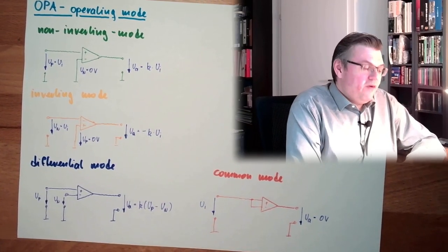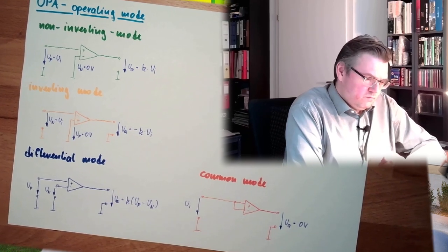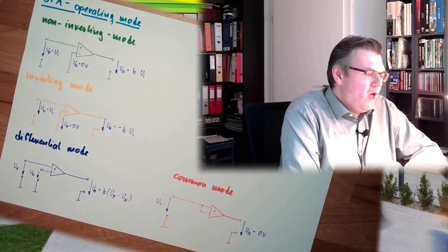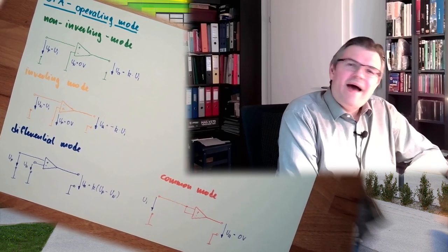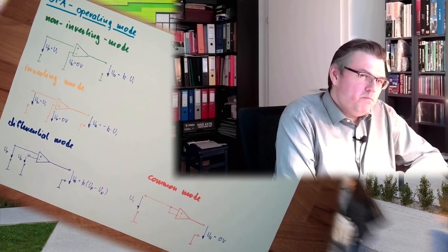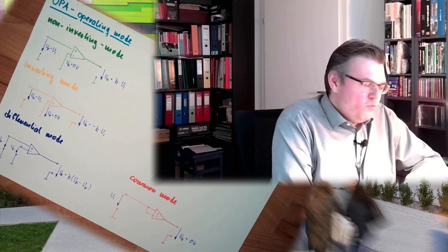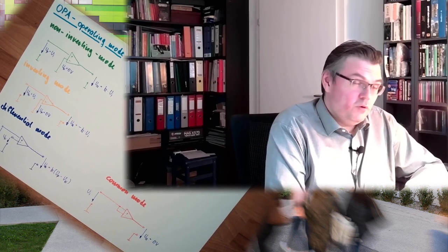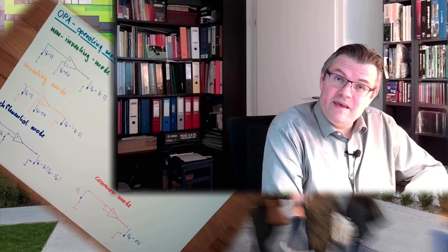However, there are some properties. And we call an operational amplifier ideal if we meet some properties, some special properties. One of these properties is that this K is as high as possible. An ideal would have a K unlimited.